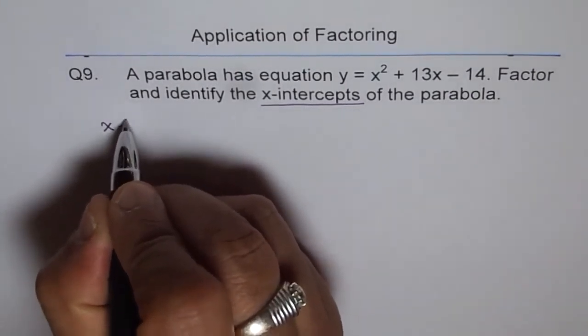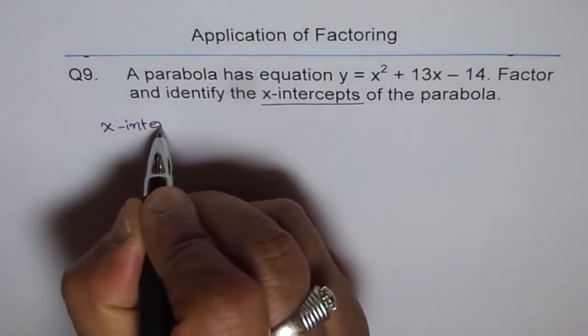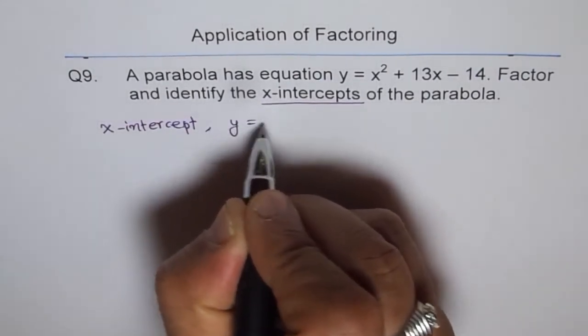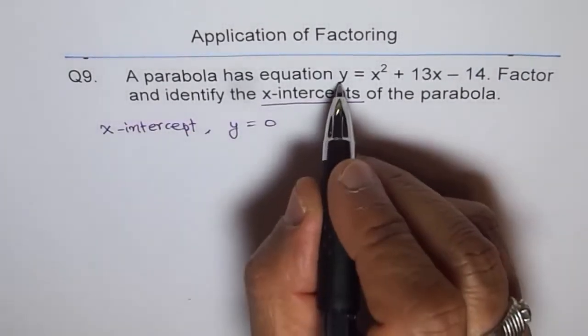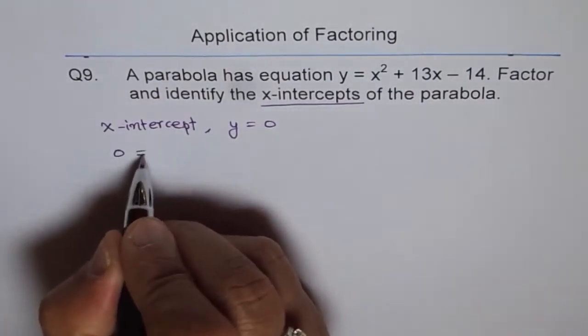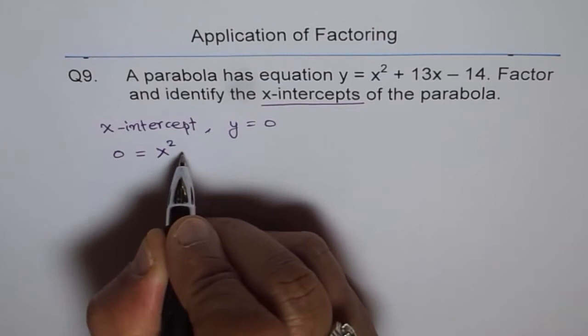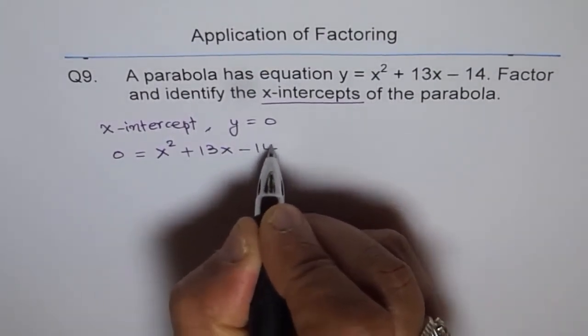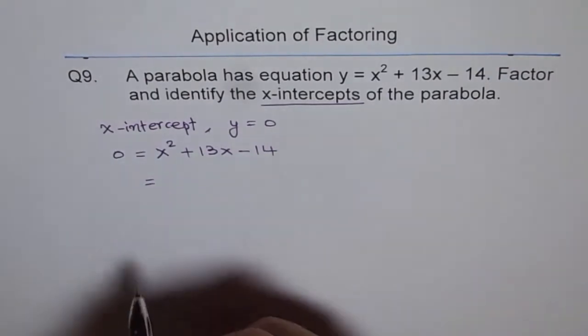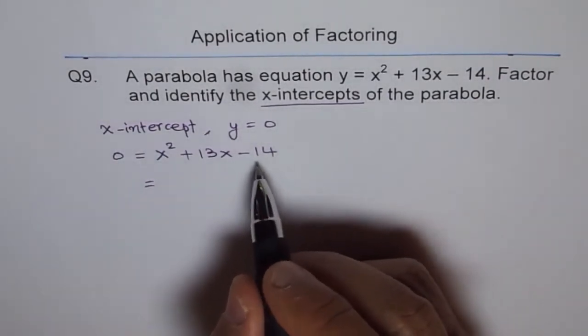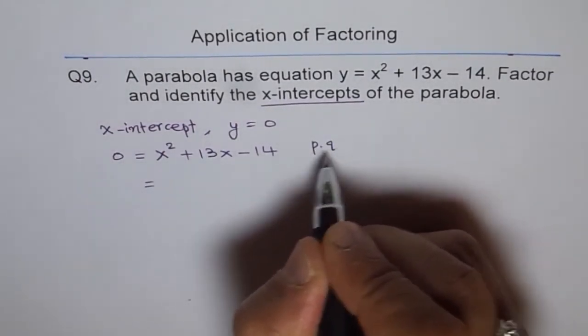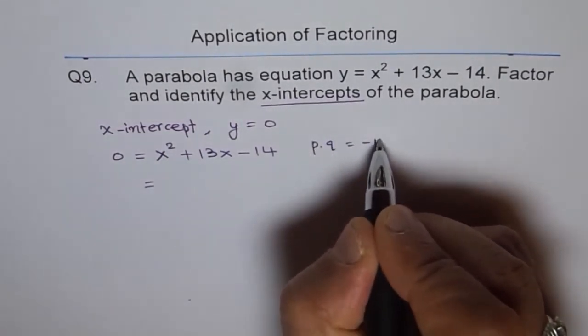At the x-intercept, y = 0. So we'll equate 0 here and factor the right-hand side. We get 0 = x² + 13x - 14. To factor this, we are looking for two numbers whose product is -14.